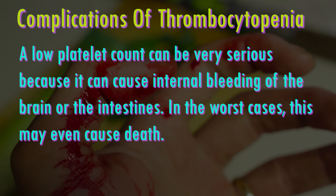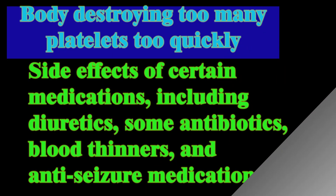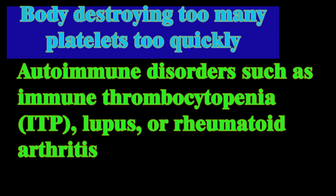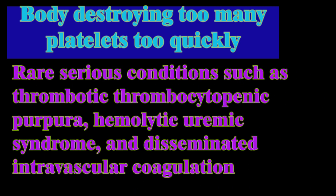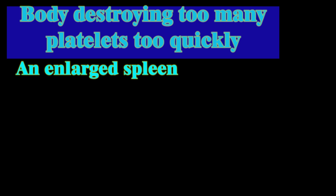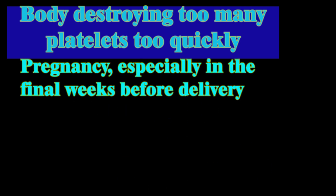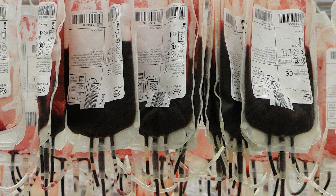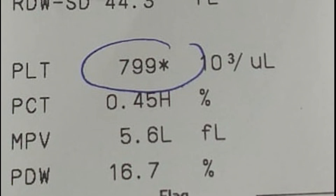Certain types of cirrhosis, certain types of cancers like leukemia and lymphoma, myelodysplasia, and some genetic conditions such as May-Hegglin and Wiskott-Aldrich syndromes also decrease platelet production. Platelets usually live around 7 to 10 days in the circulation. A low platelet count can also result from the body destroying too many platelets too quickly — due to side effects of certain medications including diuretics, some antibiotics, blood thinners, and anti-seizure medications, an enlarged spleen, autoimmune disorders such as immune thrombocytopenia, lupus, or rheumatoid arthritis, pregnancy especially in the final week before delivery, and bacterial infection in the blood.